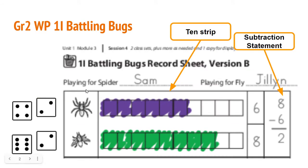The first thing that you do is player number one, it looks like here we've got Sam. Sam rolls the two dice. He gets a 4 and a 2. He's going to color in on his 10 strip 4 plus 2, which would be 6.